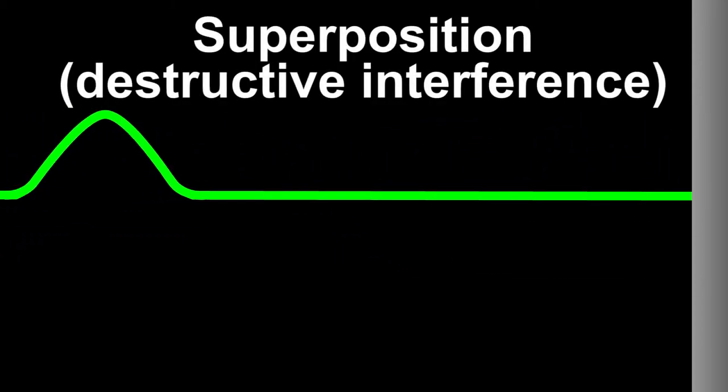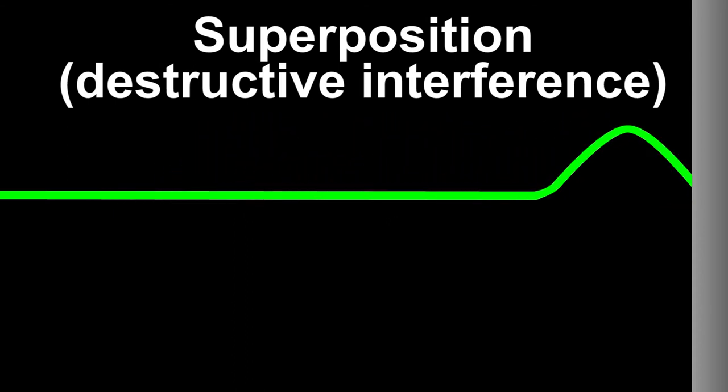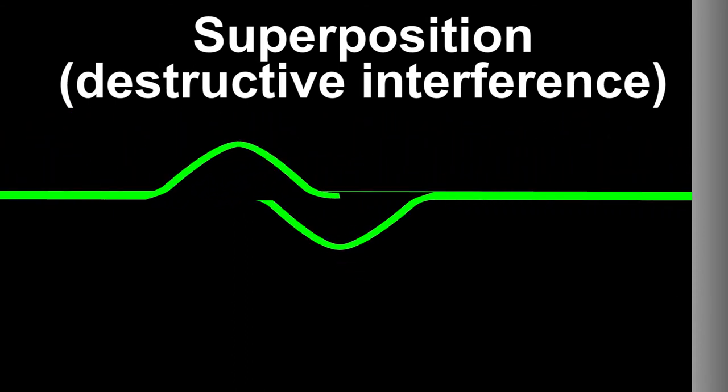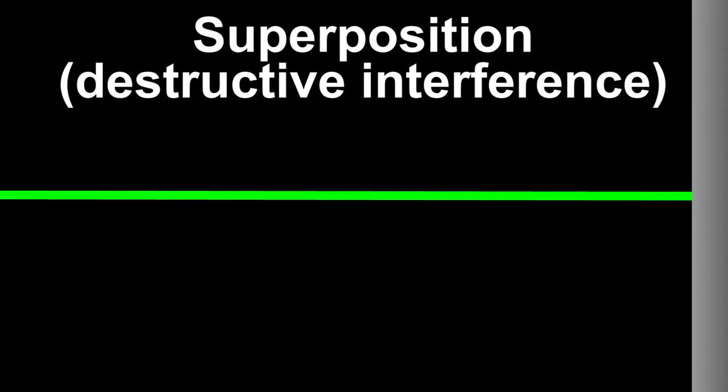But what would happen if we hit one of those returning troughs with another crest? Well, then those two waves would overlap. This is called superposition. And in this case, these two waves would cancel out. When we get waves to cancel out like that, we call it destructive interference.